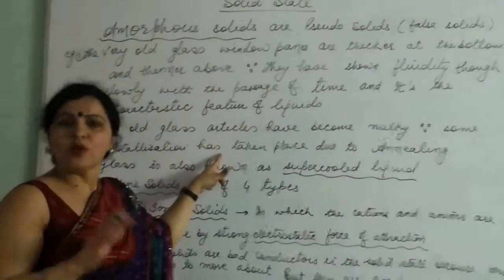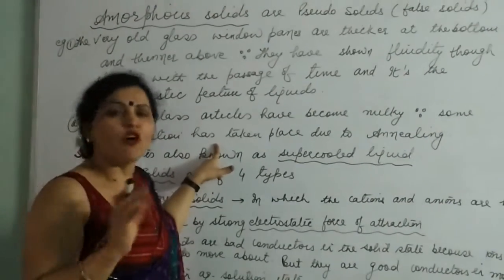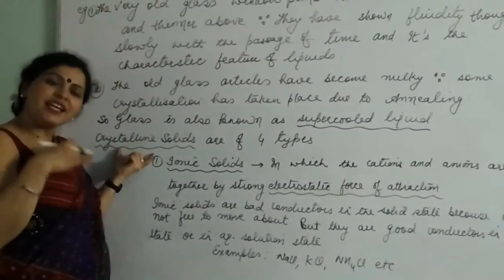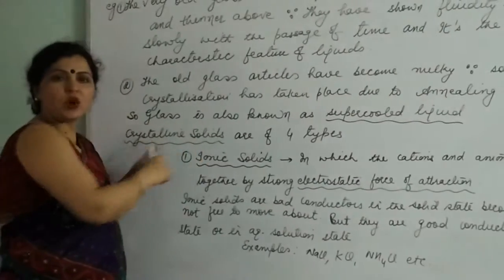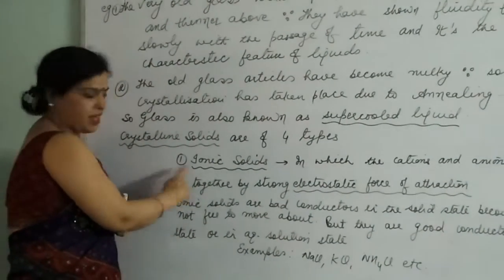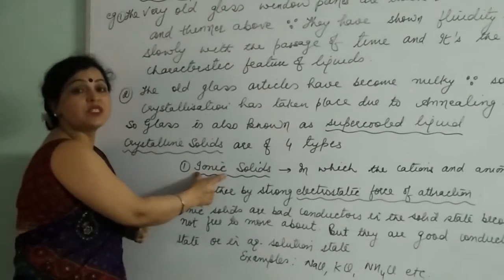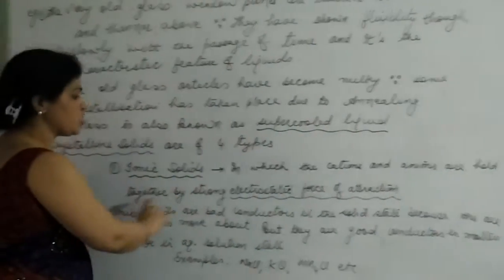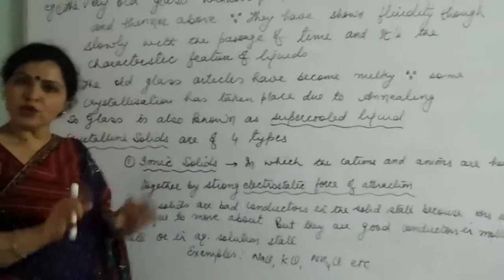Now, let us once again come to the crystalline solids. There are four types of crystalline solids. The first type is ionic solids. Ionic solids are those solids which are held together by a strong electrostatic force of attraction in the solid state.